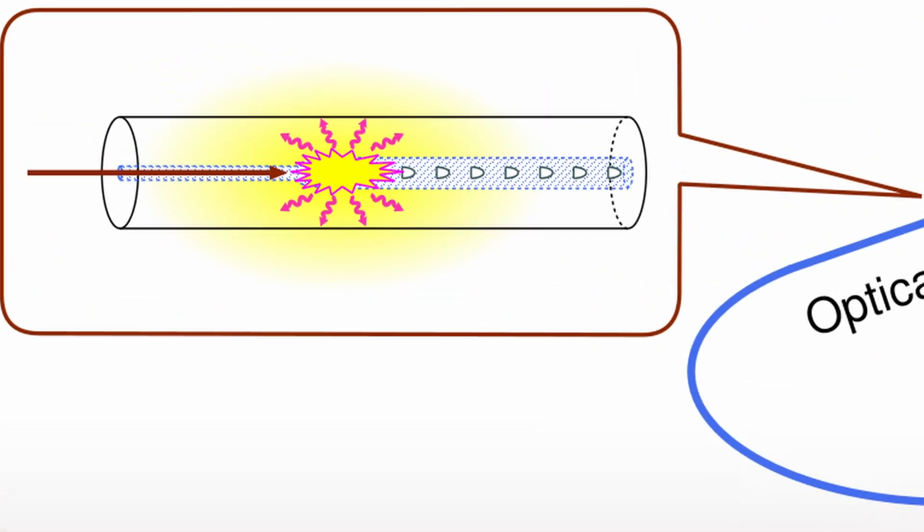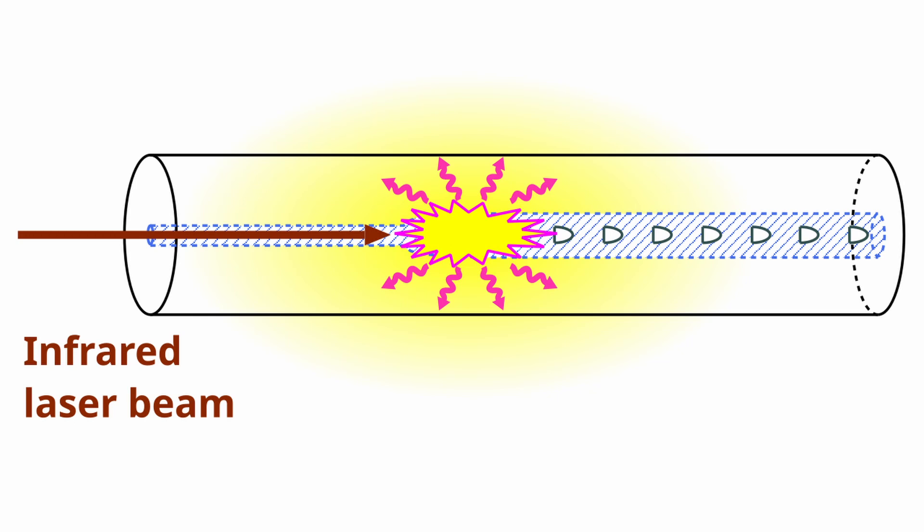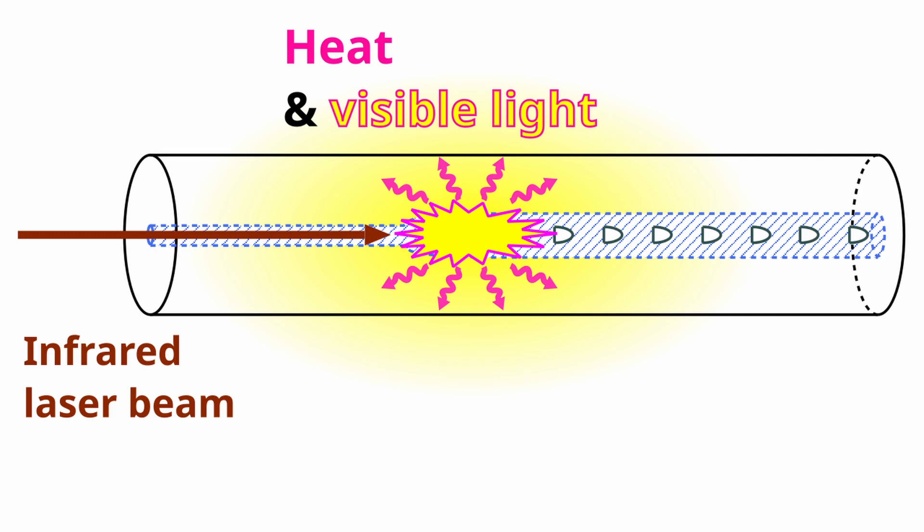It absorbs an infrared laser beam coming from the other end of the fiber and dissipates the received energy in the form of visible light and heat. It is impossible to see the inside directly because it moves rapidly with a strong light emission.